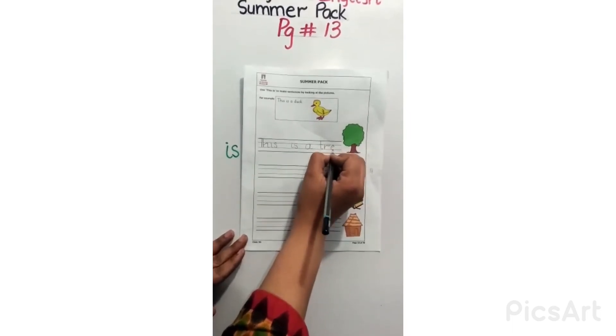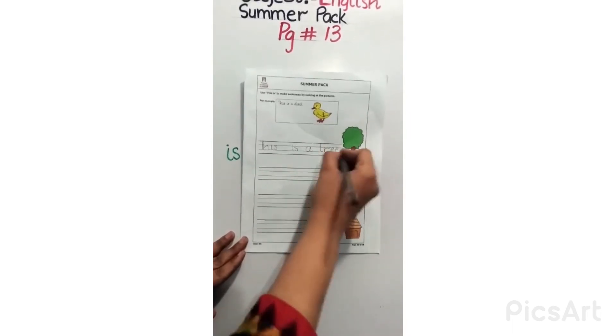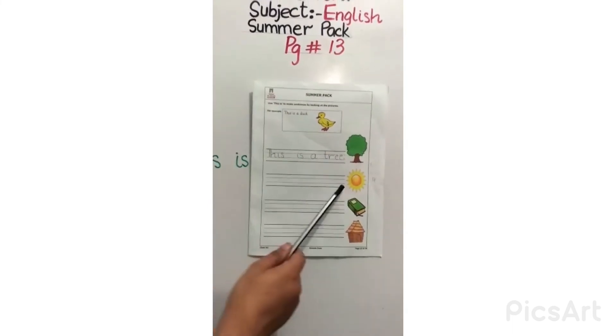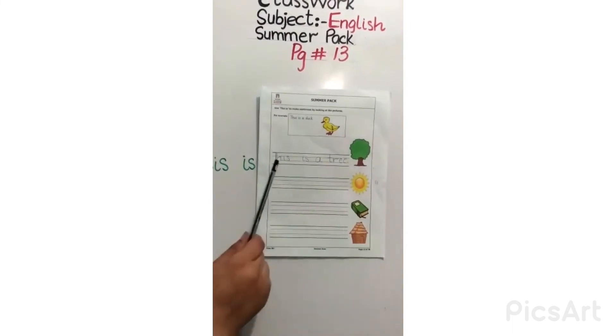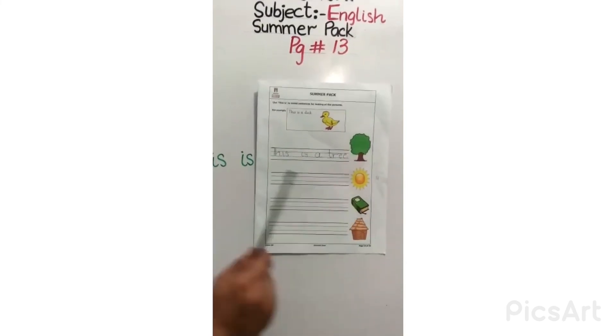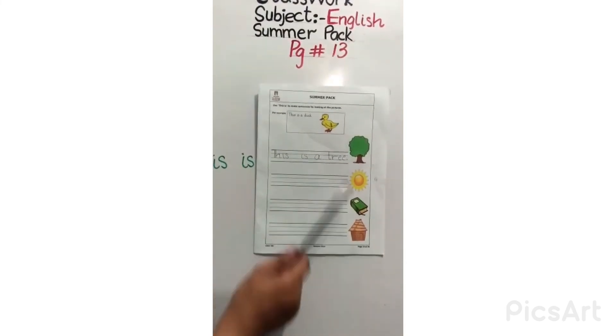This is a tree and then put full stop. So, in next sentence, you will write, this is a sun, this is a book, this is a hut.